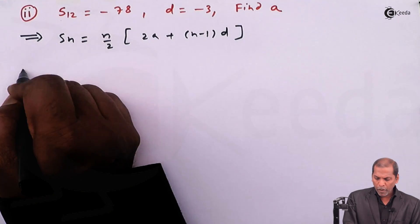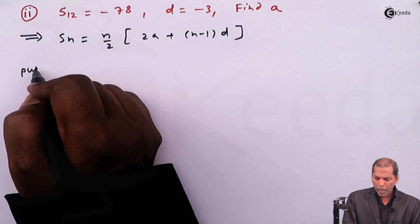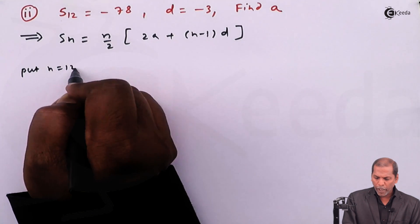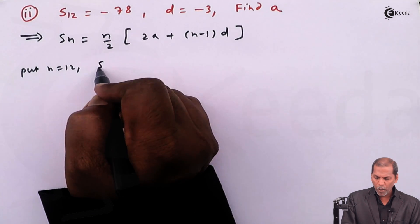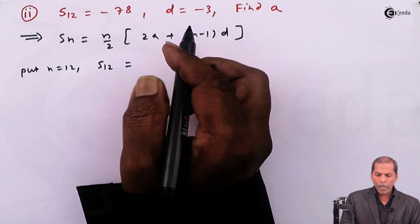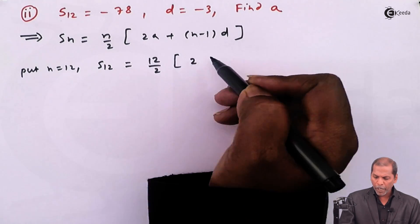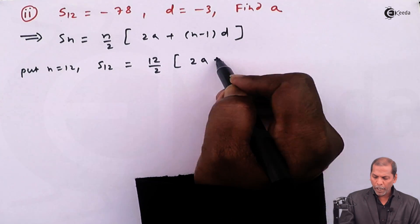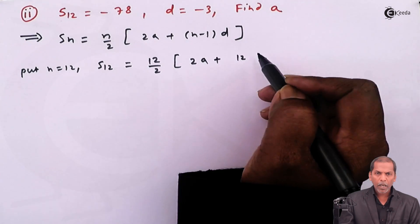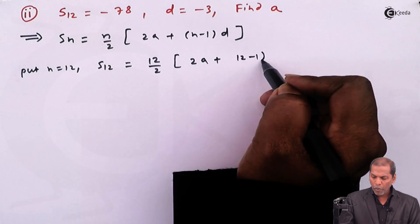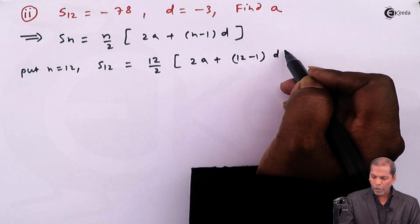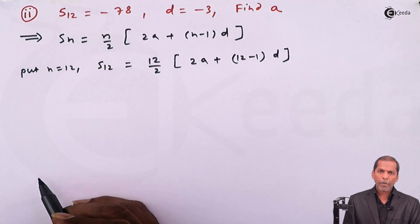Then put n equal to 12. So we have S₁₂ equals 12 upon 2 in bracket 2a plus another bracket 12 minus 1 into d and finally square bracket complete.